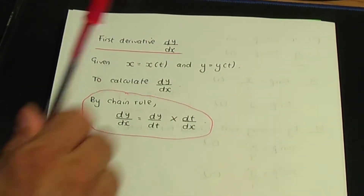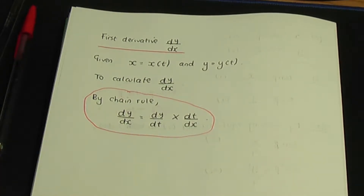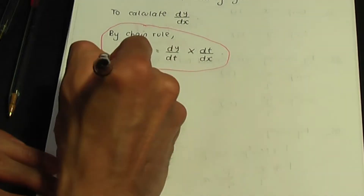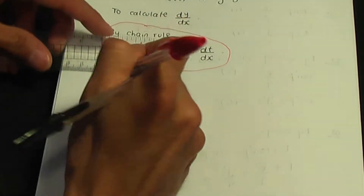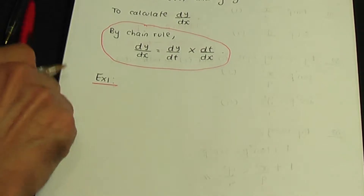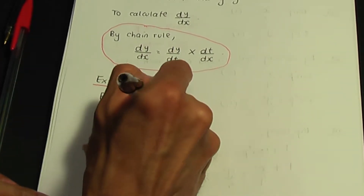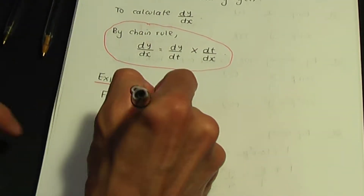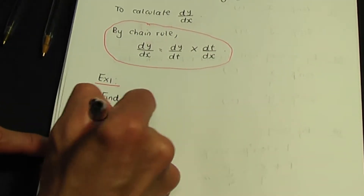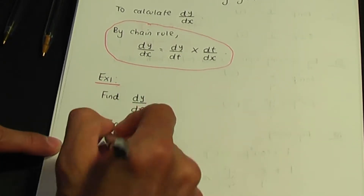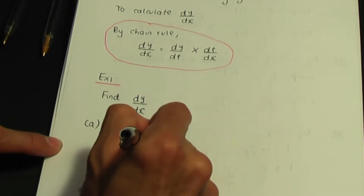Let me highlight that result and take it forward with some examples. So in example number one, the question is to find dy over dx. Part a: x is equal to 2t squared, y is equal to t cubed.